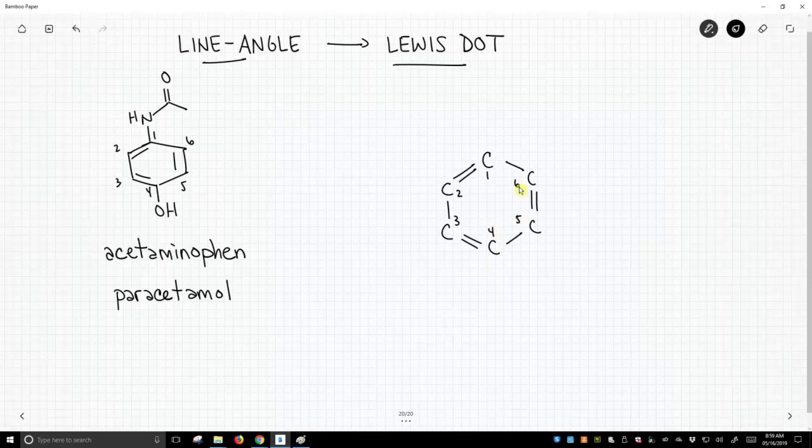Now, carbon 2 has only three bonds shown. Needs four bonds? There must be a hydrogen there. Carbon 3 has three bonds shown. It needs a hydrogen. Same is true for carbons 5 and 6.